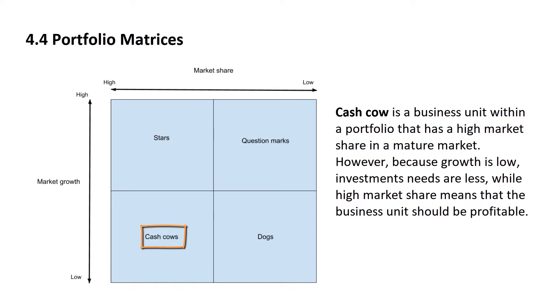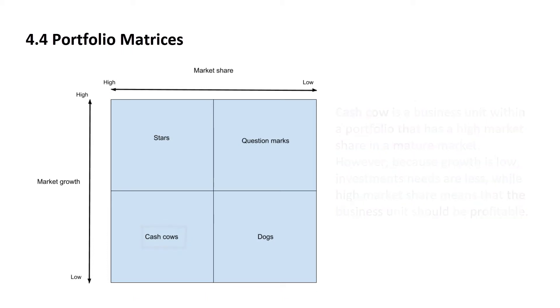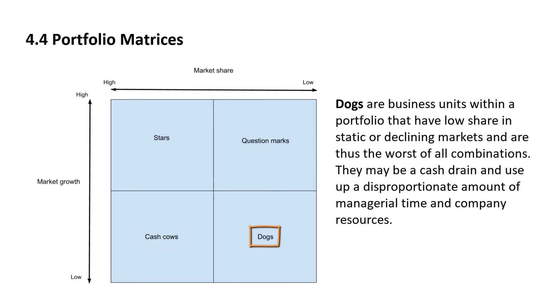The cash cow should then be a cash provider, helping to fund investments in question marks. Lastly, dogs are business units within a portfolio that have low share in static or declining markets, and are thus the worst of all combinations. They may be a cash drain and use up a disproportionate amount of managerial time and company resources.